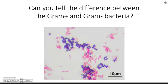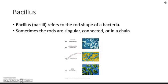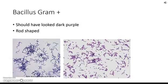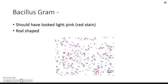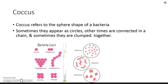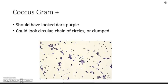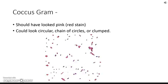Can you use your knowledge and tell the difference? Which ones are positive, which ones are negative? Remember: negative is reddish pink, positive is purple. You also need to tell me if it's rod or circular shaped, using the correct terms: bacillus for rod and coccus for circular or spherical. Here's what a gram positive bacillus looks like - purple rods. Here's a gram negative bacillus - pink rods. Coccus is a spherical or circle shape. Here's what a gram positive coccus looks like - purple circular cells. And here's a gram negative coccus - reddish pink circular cells.